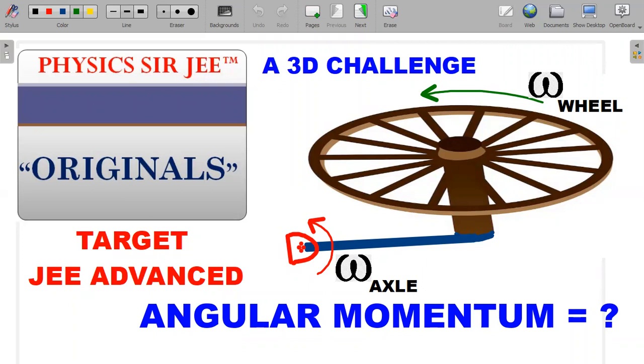There's a problem on a 3D angular momentum situation. We have a wheel and axle where the axle would be rotating in a direction which is not in the same sense as the wheel's spin. So here we go with the formal wording of the question.